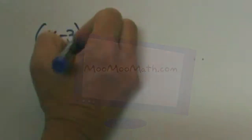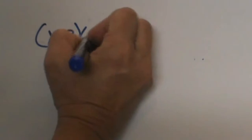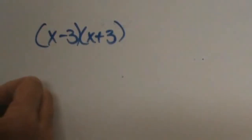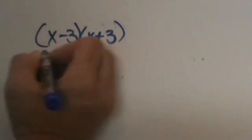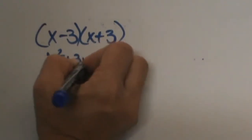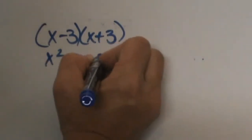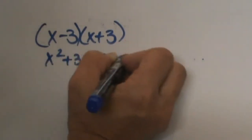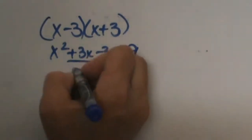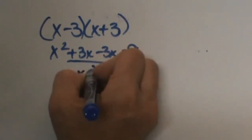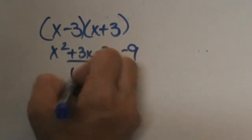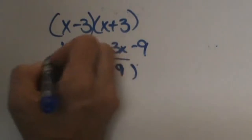x minus 3 times x plus 3. When you multiply that out, FOIL it out, you get x squared plus 3x minus 3x minus 9, so your middle terms are gone and you end up with x squared minus 9. That makes it really easy.